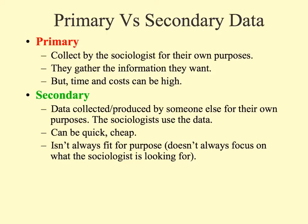Primary data is collected by the sociologist for their own purposes. This generally means they gather the information they want, or their team gathers the information that they want. But time and cost can be very high, and time and cost is very much a practical issue for many sociologists. Secondary data is data which is collected by someone else for their own purposes, or another organisation for their own purposes.